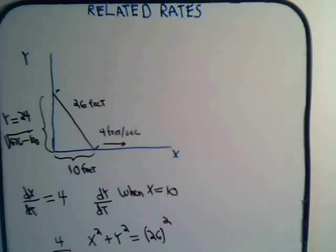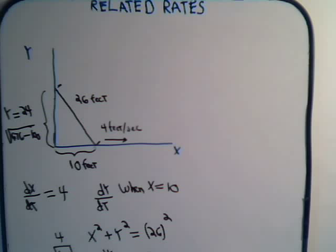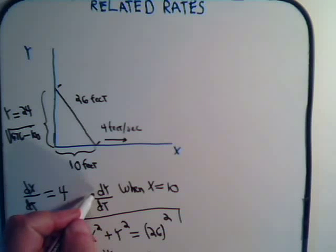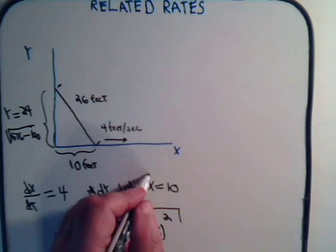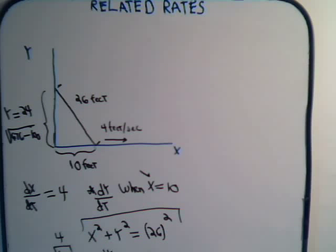Again, hopefully there's an illustration here that for all these related rates problems, it's the same thing. Whenever possible, draw a diagram, write down what information you're given, and then the next step is going to be look at the variables that you have and find some relationship between them. Here it was very simple for us. It was just this. So we take derivatives and eventually solve for this at that particular value.